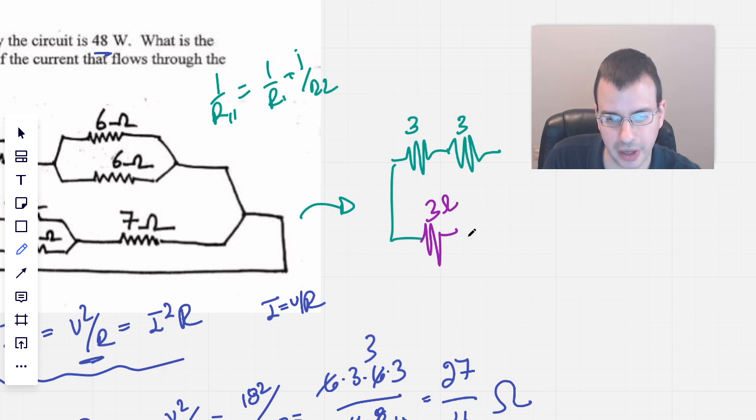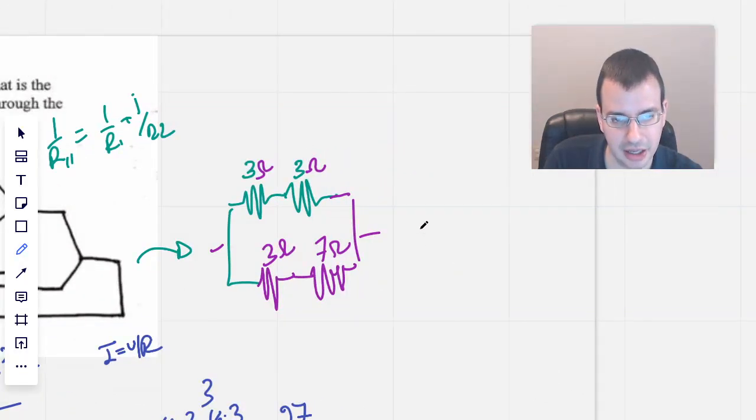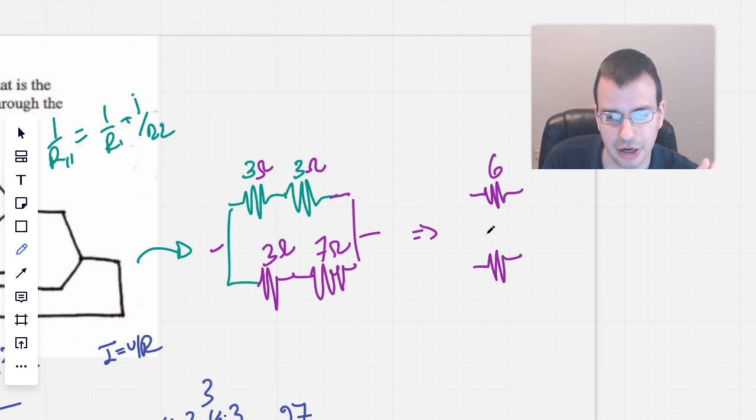So this will be 3 ohms here, and then we're going to add that to a 7-ohm. So now these are a little bit simpler. Now we can redraw this again as 6 ohms, because we're combining two in series, and then we're going to have 10 ohms.